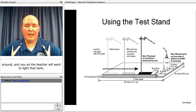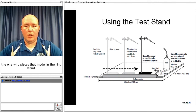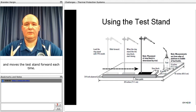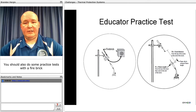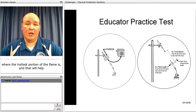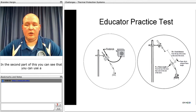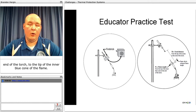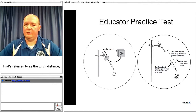You as the teacher will want to light the tank, and once students have submitted their model, you should be the one who places that model in the ring stand and moves the test stand forward. You should also do some practice tests with a fire brick to see where the hottest portion of the flame is. You can use a paper clip to measure the flame length from the end of the torch to the tip of the inner blue cone. The distance from the tip of the screw to the end of the torch is referred to as the torch distance.